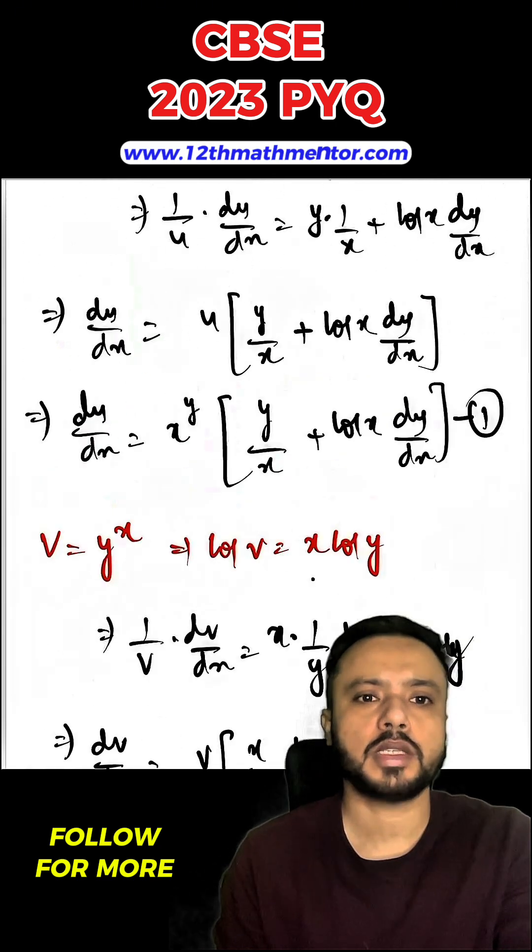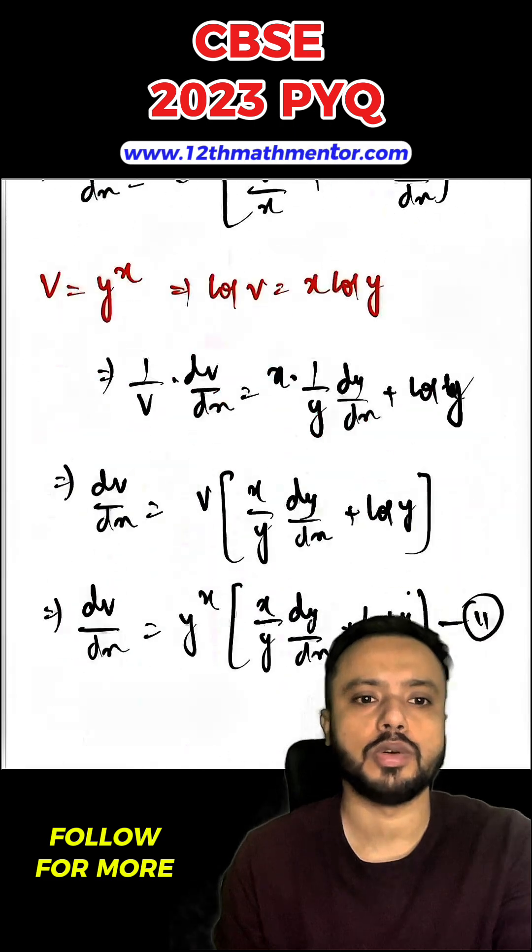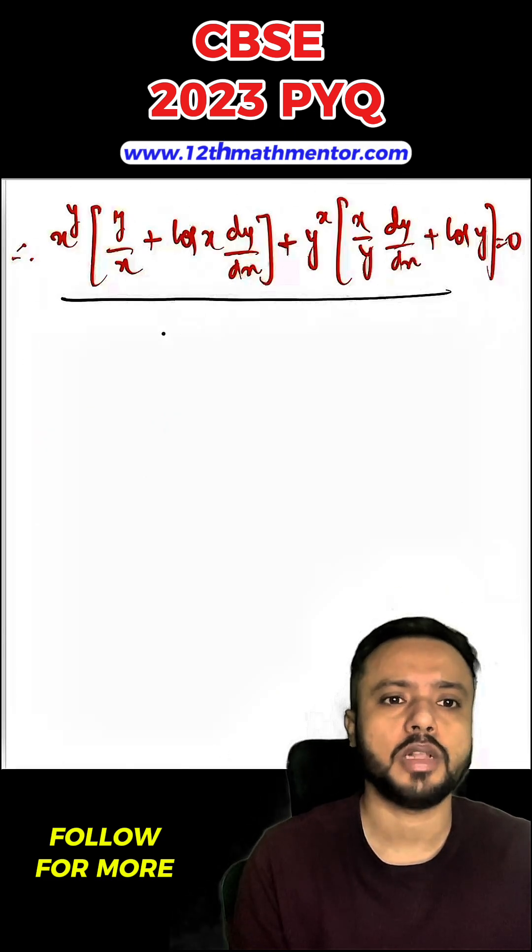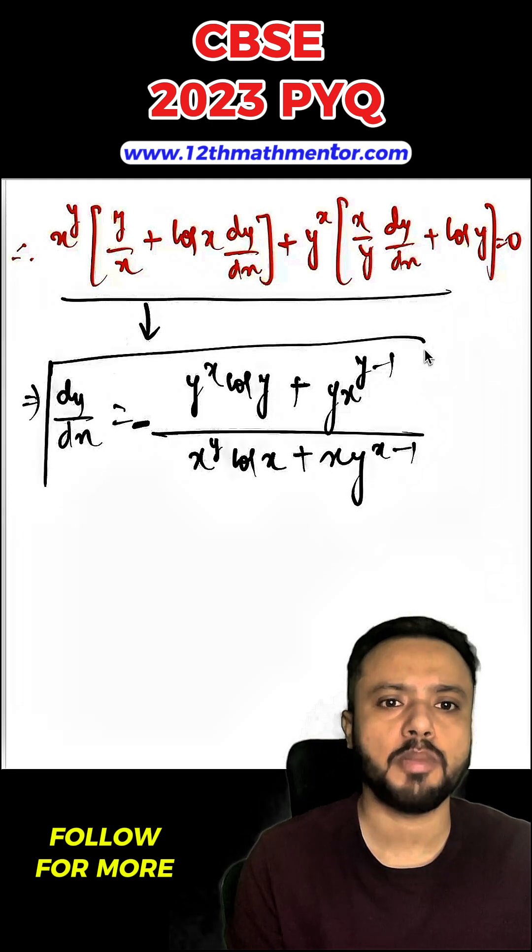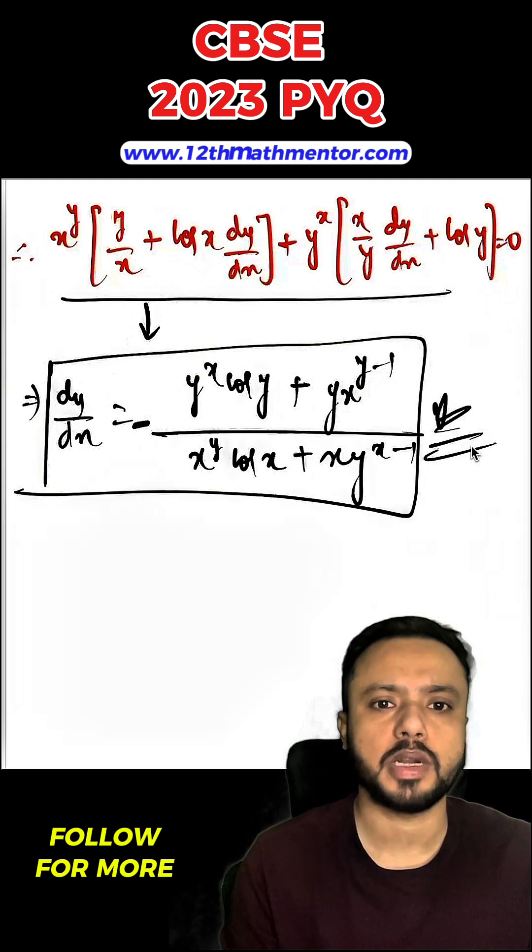Now this dv upon dx and du upon dx value we will put here and equate it to 0. After substituting the values I got this, so now I will solve this and find the value of dy upon dx. When you simplify this, you will get dy upon dx as this particular thing. So this is my desired answer.